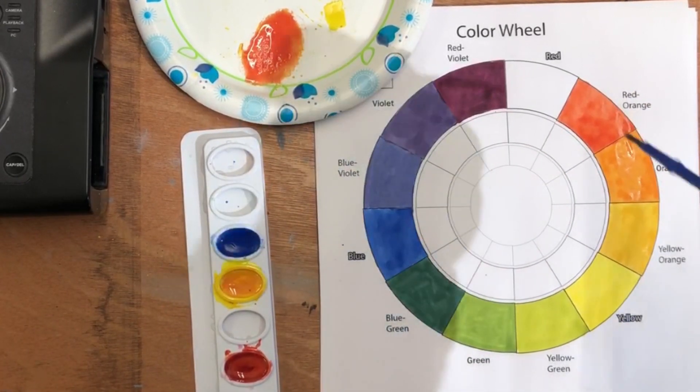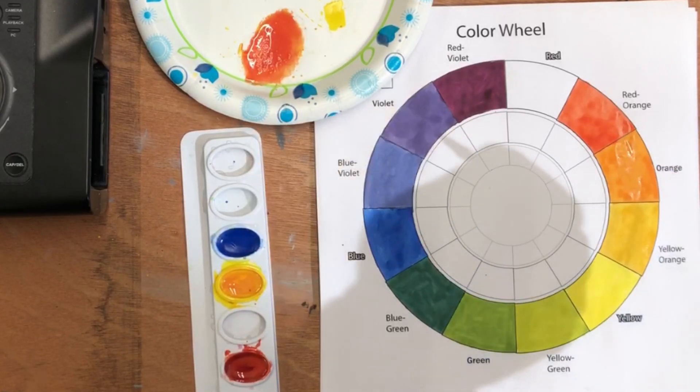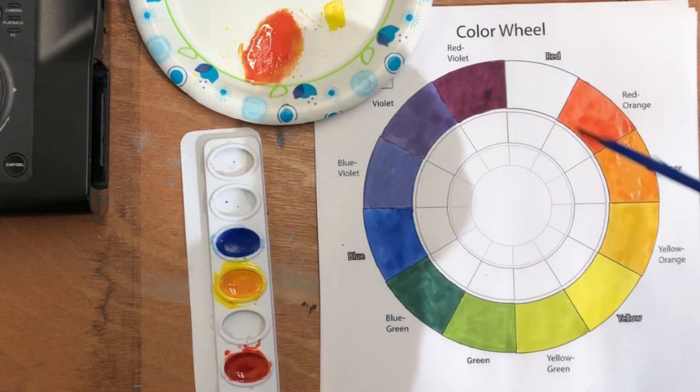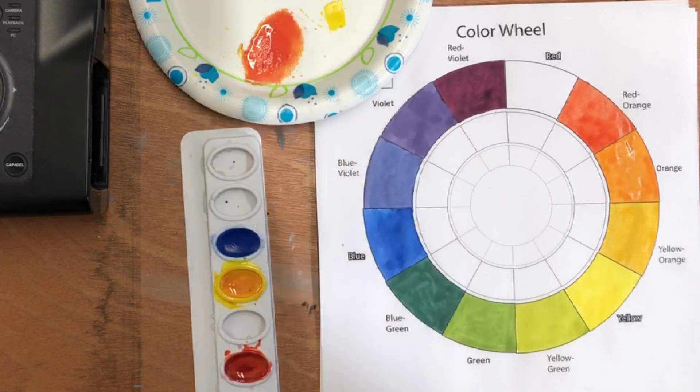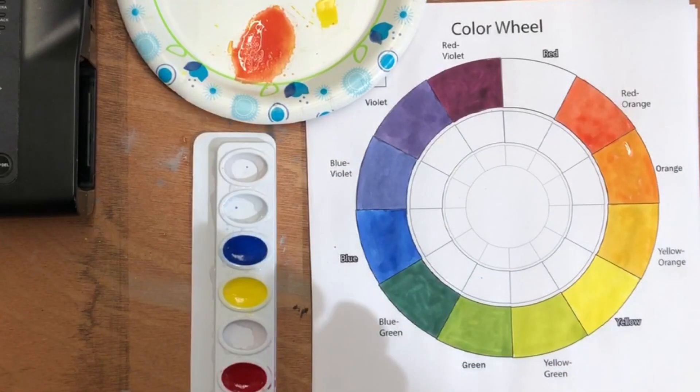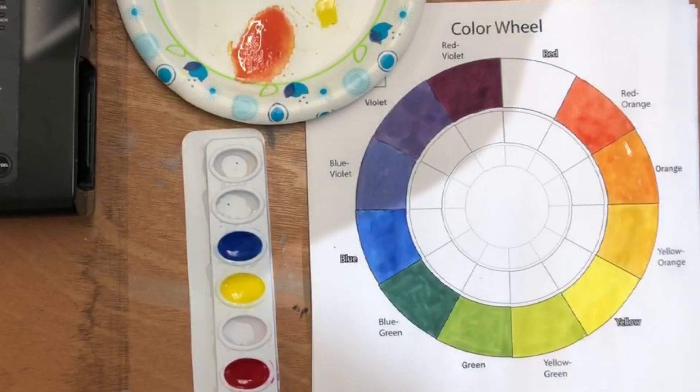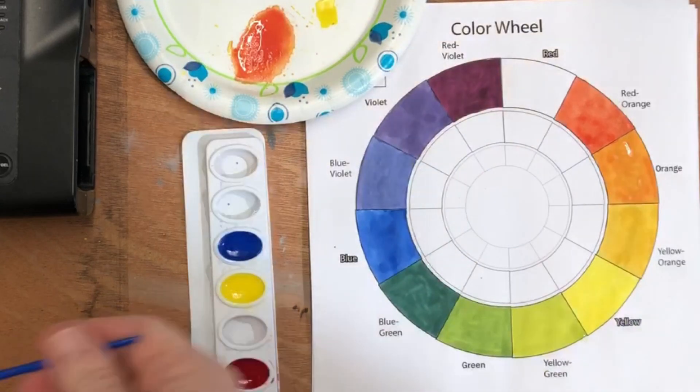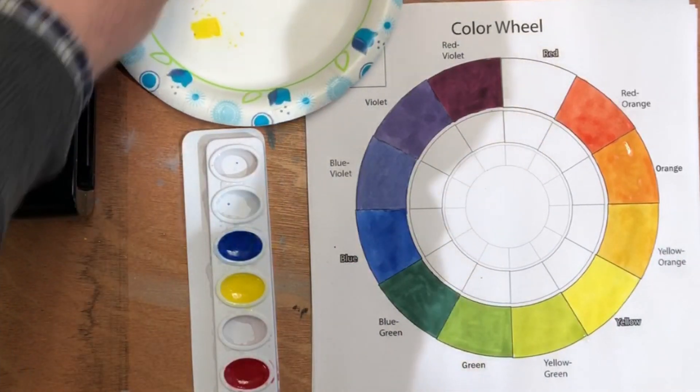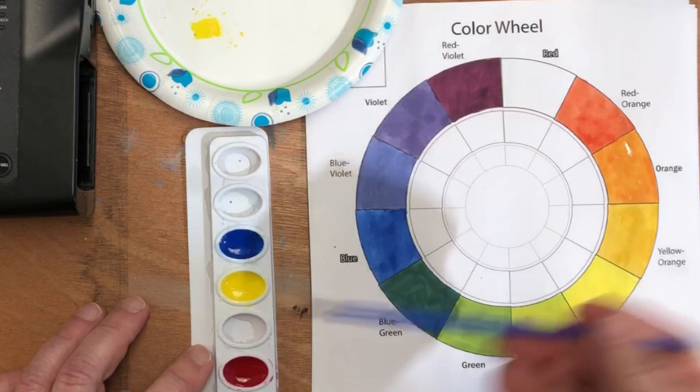So once again, we've worked our way around so that we're almost to the red. So I'm going to rinse that red out so there's no yellow in it, and then we'll lay that in and that'll be the end of our color wheel. So I've rinsed out my colors again, got some fresh water, cleaned my brush really well, so I'm going to get a nice true red. I'm going to move this around so I can get a fresh place to work.